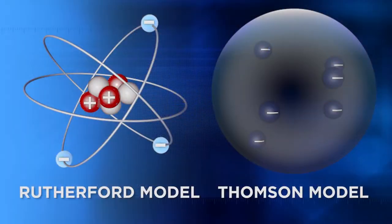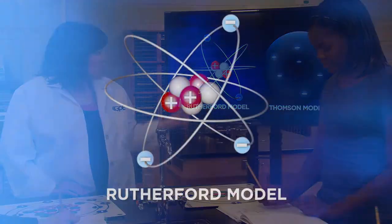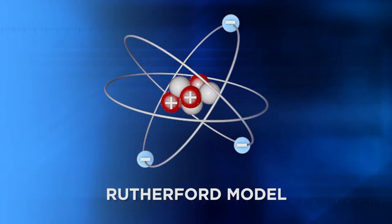We've explored the first two models of the atom, but improvements continue as new information becomes available. Around the same time Thomson was working, another model emerged — the solar system model. This model still has positive and negative charges and a nucleus in the middle, with electrons orbiting the positive charge area in the center like planets going around the sun. The positively charged area in the center is known as the nucleus.